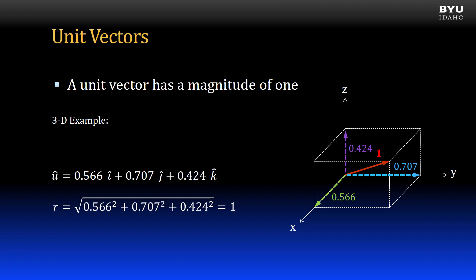Calculating the magnitude of the vector using the Pythagorean theorem confirms that it is a unit vector, since the magnitude is equal to 1.